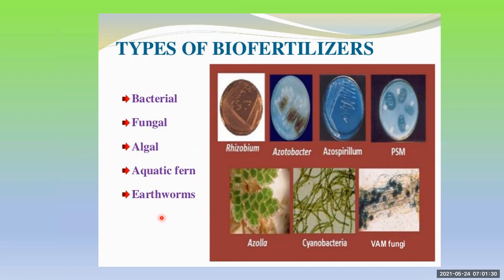Earthworms can be used for production of vermicompost and hence it can be used as a biofertilizer. Fungi, especially the mycorrhizae — in the range of mycorrhizae we have ectomycorrhizae, endomycorrhizae. The most important mycorrhizae used as biofertilizers are generally the VAM fungi — vesicular arbuscular mycorrhizae.